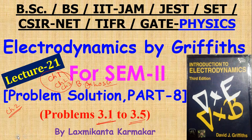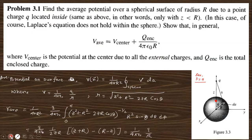Let us start with question number 3.1, which says: find the average potential over a spherical surface of radius r due to a point charge q located inside. This is similar to section 3.14 of the book, which had a charge outside the sphere, but here q is located inside the sphere.